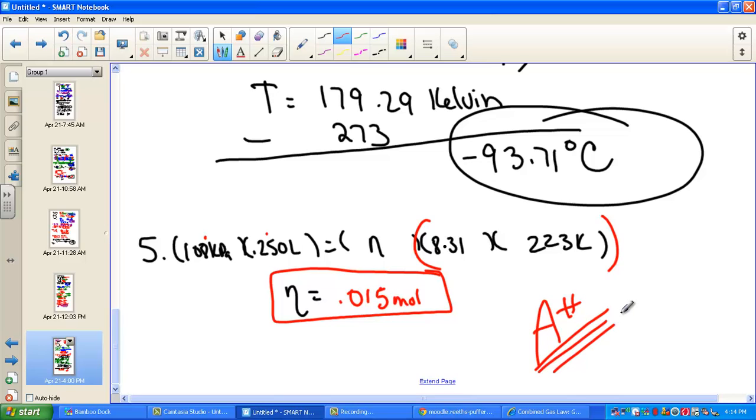Hey friends, you just successfully PV equals NRT-ed. A plus. Give yourself that feeling. When ready, go on to the next objective.